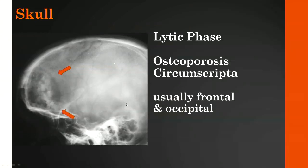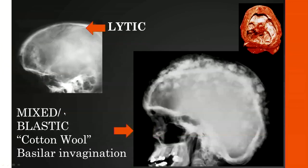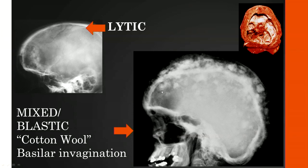In the skull, the lytic phase is characterized as osteoporosis circumscripta—a large lucent area on the radiograph, usually found in the frontal or occipital region. As time goes on, the mixed and blastic phases take over, and you can have a cotton wool appearance in the skull. If the skull base is involved, basilar invagination can occur. Here's a pathologic specimen showing the skull involvement with a markedly thickened skull.